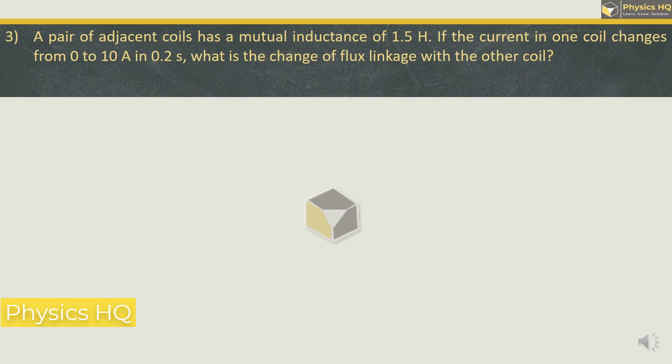Let us check out the next problem. A pair of adjacent coils has mutual inductance of 1.5 henry. If the current in one coil changes from 0 to 10 ampere in 0.2 second, what is the change in flux linkage with the coil?